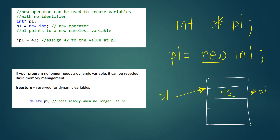The other key operator that can be used is delete. The new operator can be used to allocate memory. Delete can be used to free dynamic memory that was allocated. So if you go delete P1, that removes P1 and deletes all access to that. Since there was no variable that it pointed to, it will also free up that memory, and that memory can be used for something else.